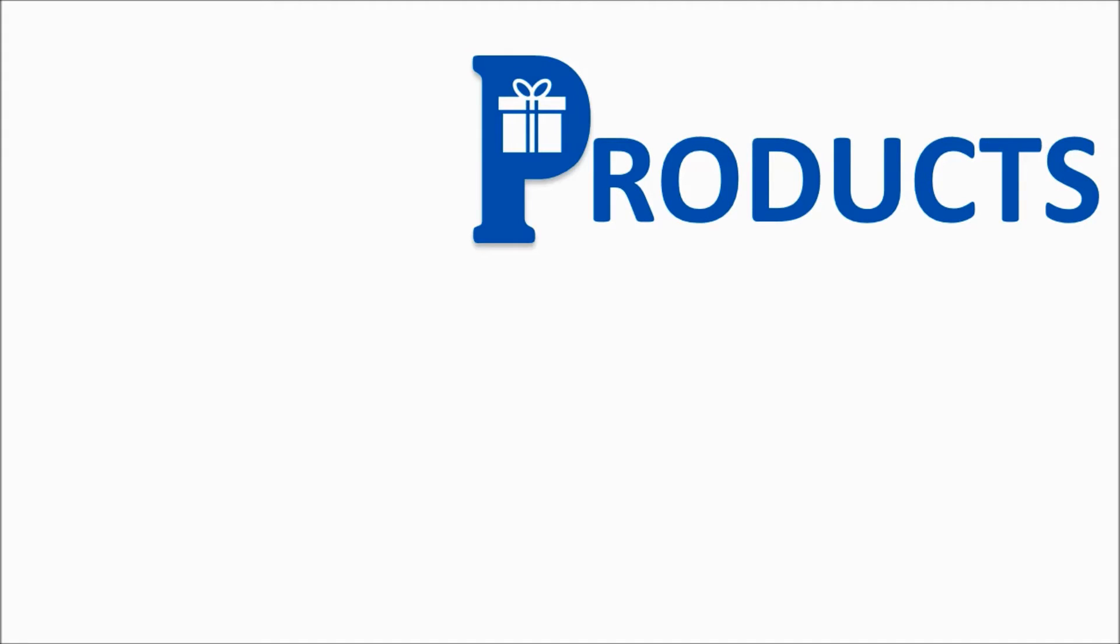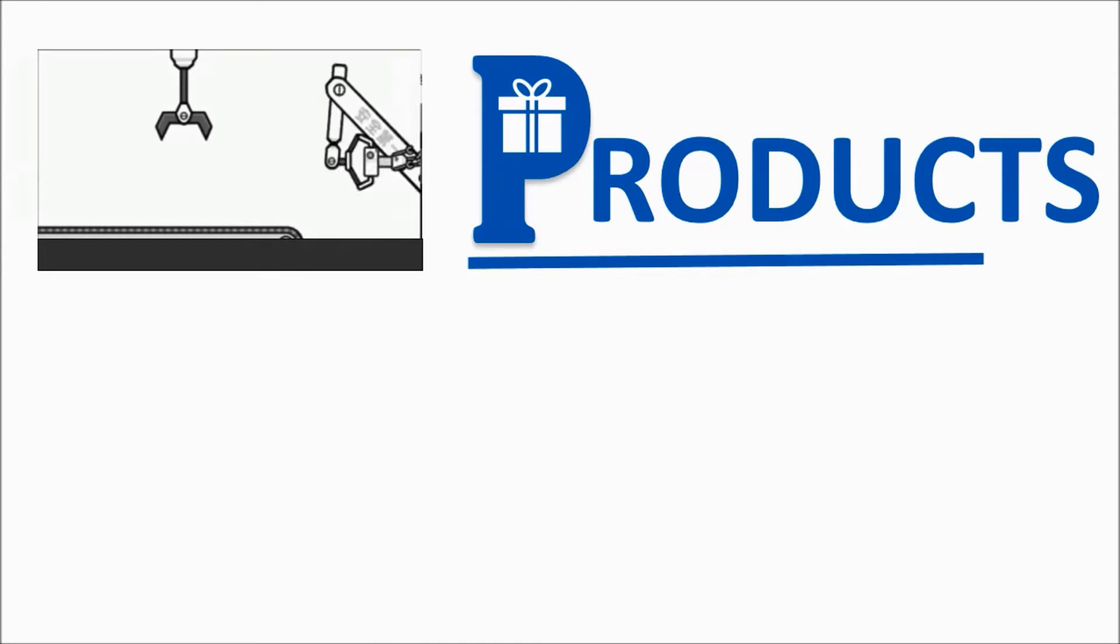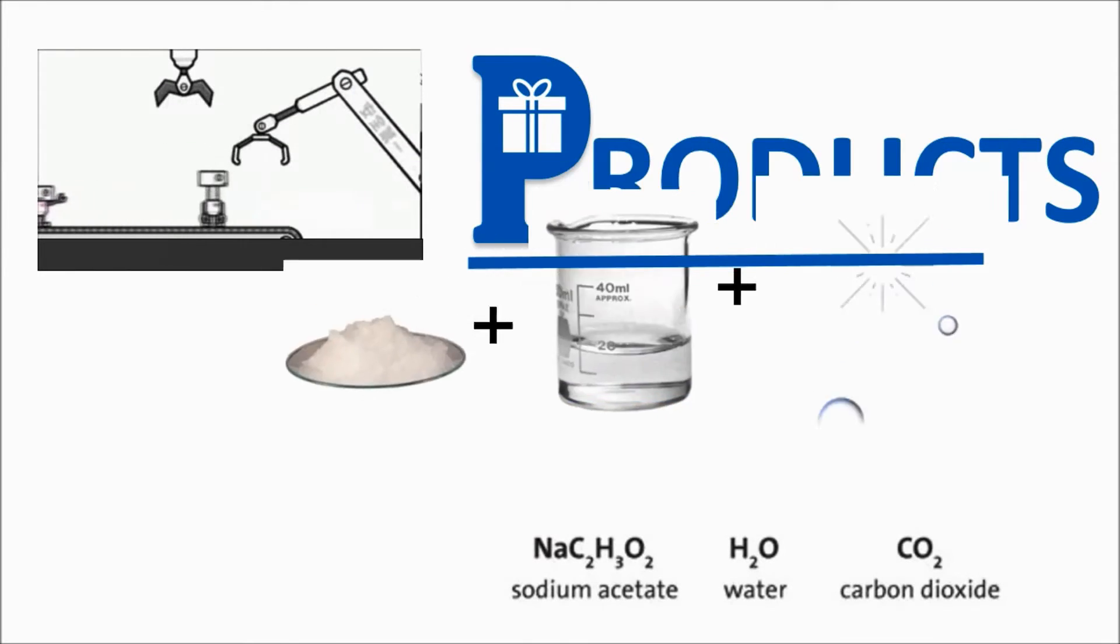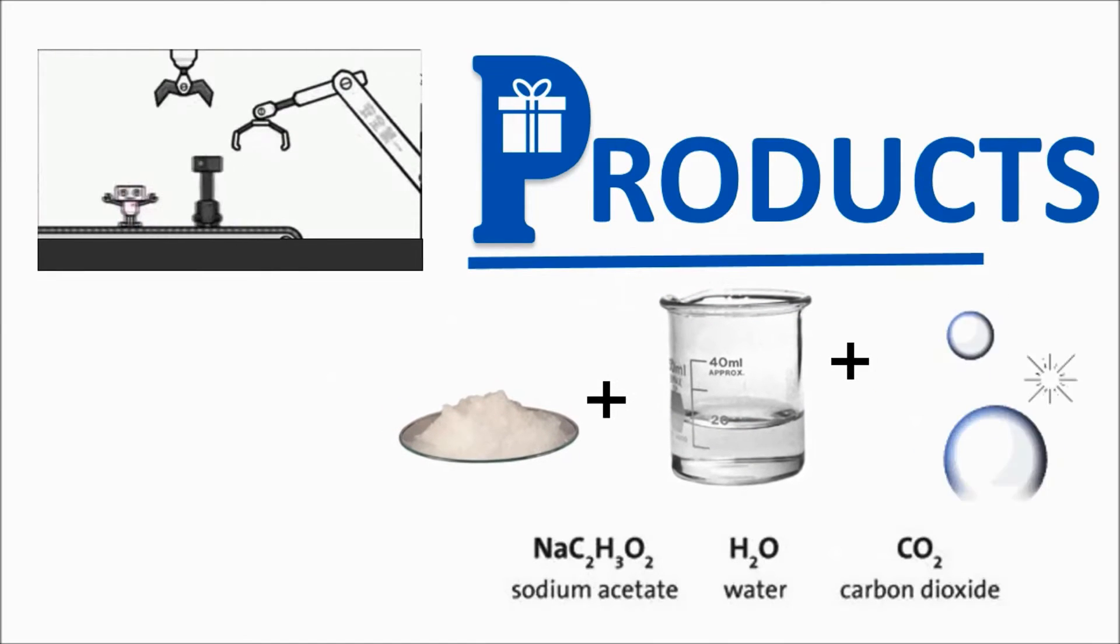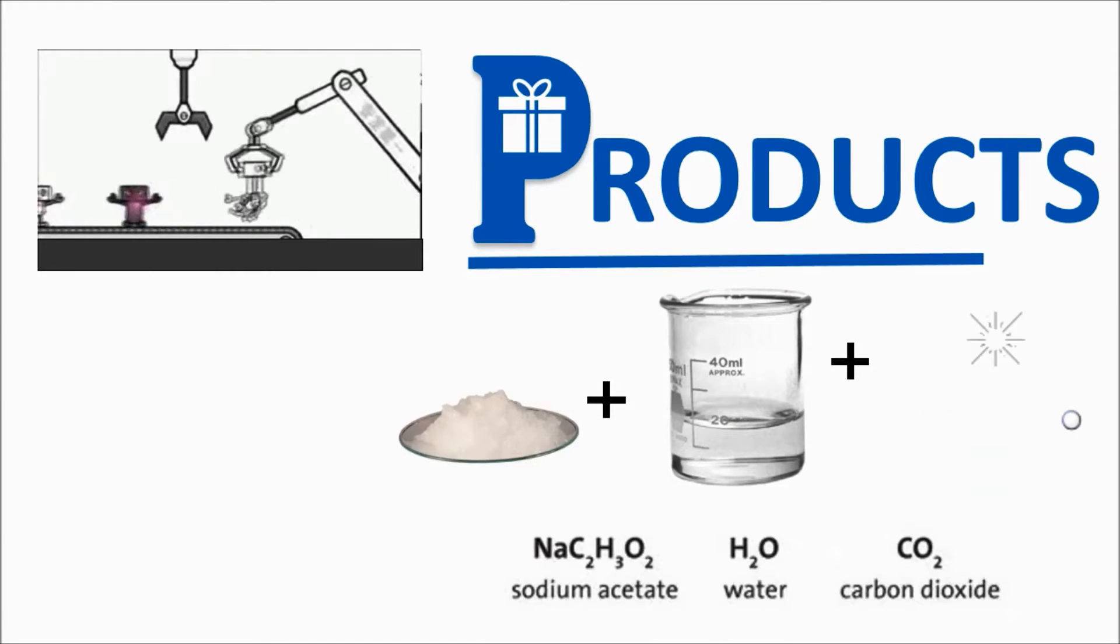And the new substances they formed are written on the right side of the equation. They are called the products. This makes sense, because they are the substances made or produced in the reaction. In our example reaction, sodium acetate, water, and bubbles of carbon dioxide form. They are the products.